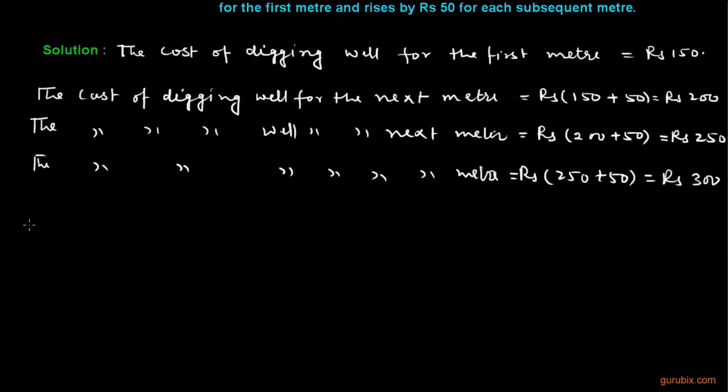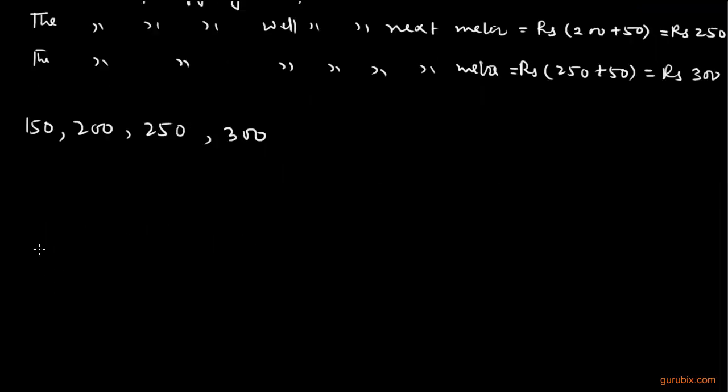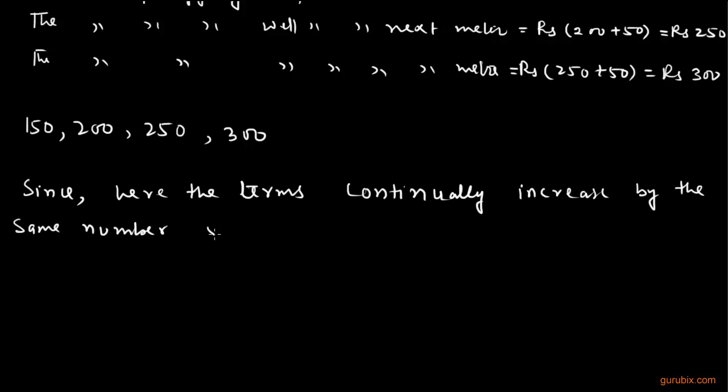So the numbers are as follows in this statement: we get Rs 150, 200, Rs 250, and Rs 300. Since here the terms continually increase by the same number 50, so the list forms an AP.